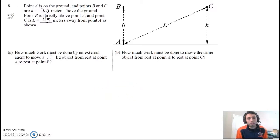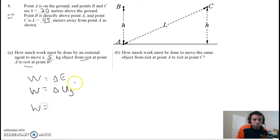On this one, point A on the ground and point B and C have different distances. Part A is asking us how much work must be done by an external agent to move a 5-kilogram object from rest at point A to rest at point B. We're just going straight up. The only kind of energy we're changing here is potential energy because it's going from rest at point A to rest at point B. They're not moving, so there's no change in kinetic energy. The only change, work is a change in energy, the only kind of energy change happening here is potential. Our work really is just a change in potential energy, gravitational potential.